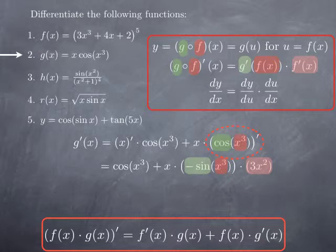So in the second term in the sum, we have x multiplied by negative sine of x cubed multiplied by 3x squared. That simplifies to negative 3x cubed times sine of x cubed.